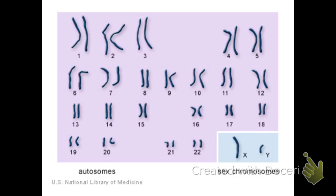Here are our chromosomes. We have 22 pairs called autosomes, and then the 23rd pair determines our biological gender — those are what we call the sex chromosomes.